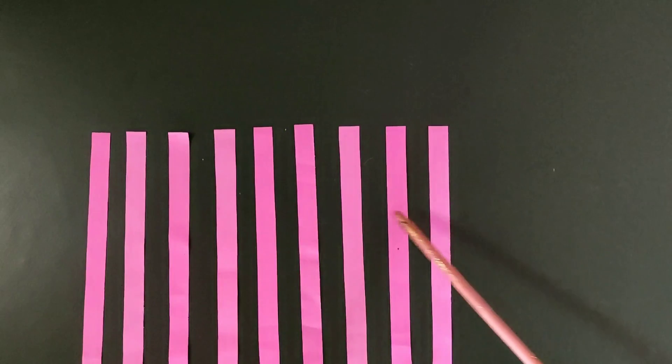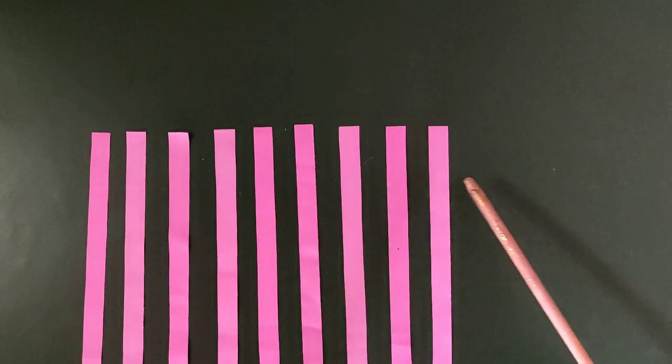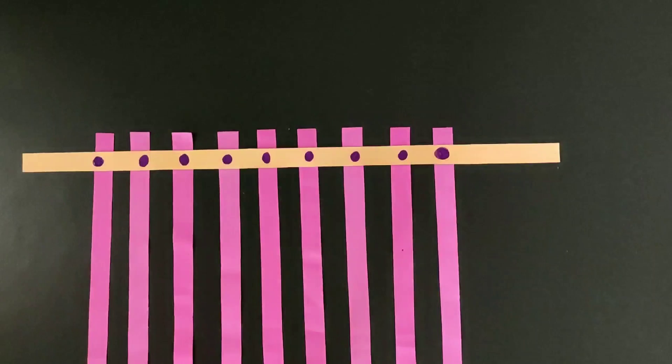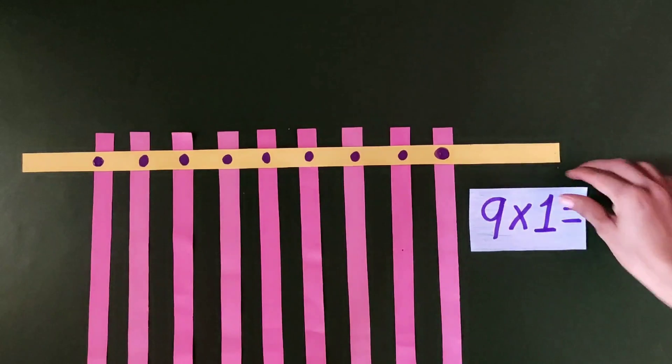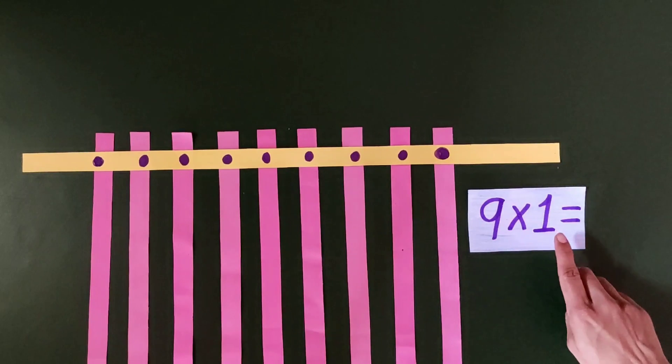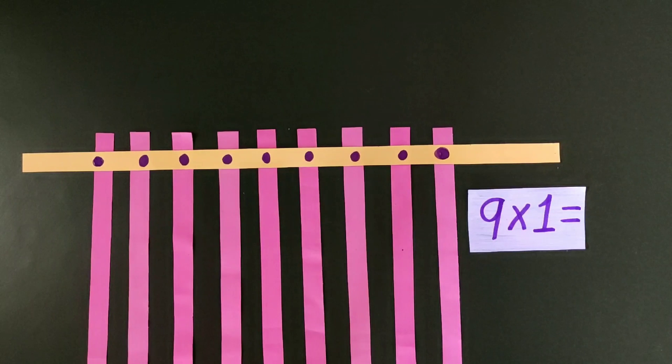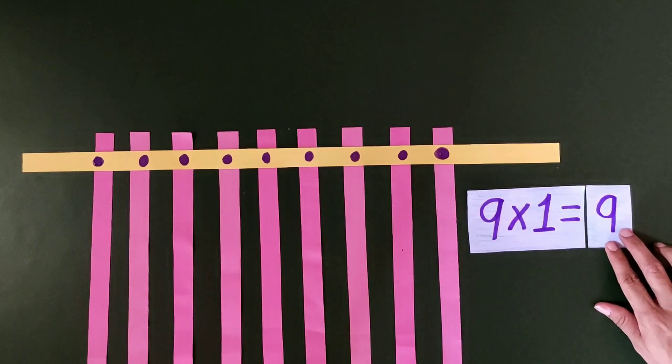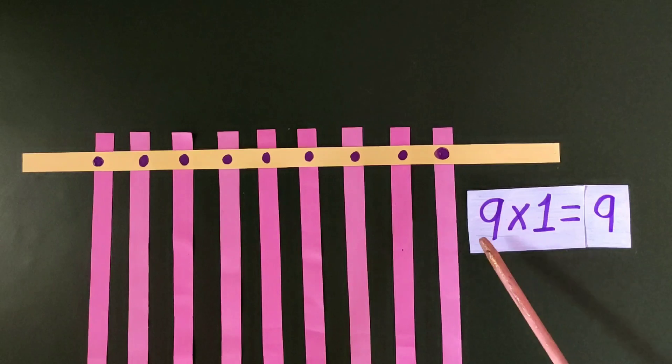Here we have vertical paper strips. They are 9 in number. Let's place a horizontal strip over them and by doing that we get intersecting points. They are 9 in number. So it means when 9 paper strips are cut with one horizontal strip, the intersecting points are 9. 9 multiplied by 1 equals 9.